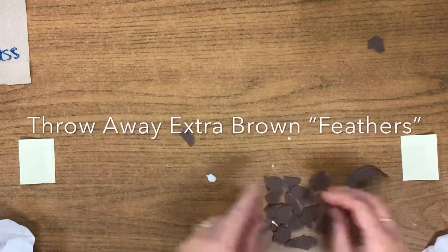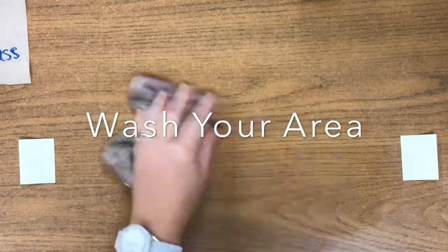To clean up our mess, all of this can go into your table trash can. You can use a wet wash rag to wash off the glue.